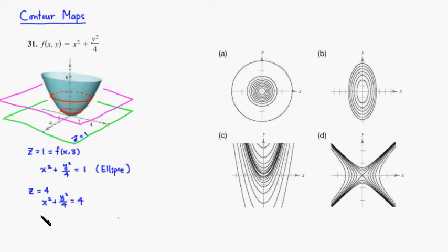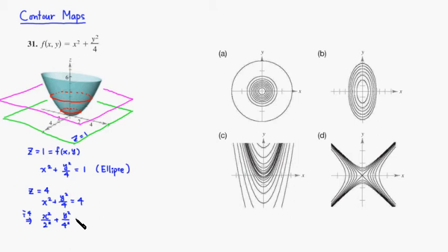If you divide through by 4, you see that x squared over 4 — written as 2 squared, which is the same thing as 4 — plus y squared over 4 squared equals 1. Again, this is an equation of an ellipse.